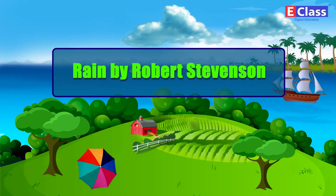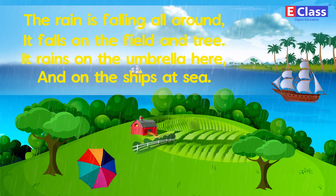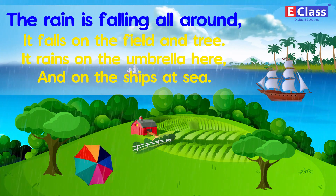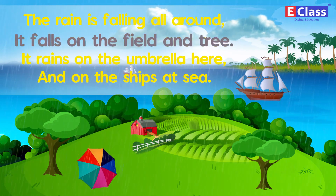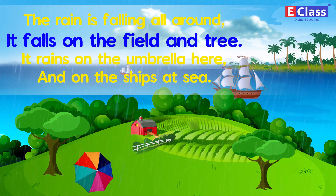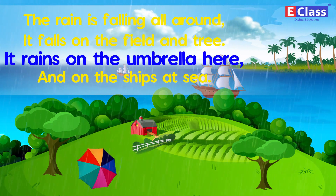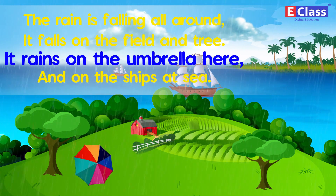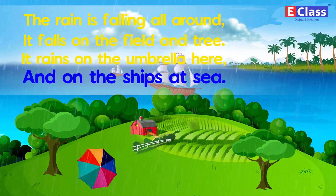Rain by Robert Stevenson. The rain is falling all around. It falls on the field and tree. It rains on the umbrella here and on the ships at sea.